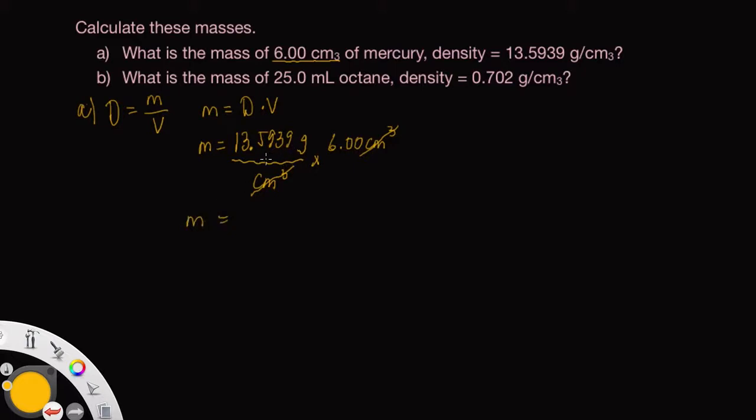So let's calculate this out on our calculator. And write what we first get, 81.5634. Now we want to round this to the proper sig figs. This problem has three sig figs in the volume and many sig figs in the density. So we round this off to three sig figs.